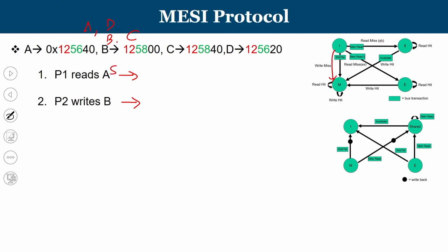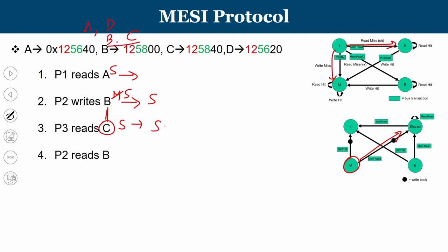P3 reads C: since B and C are in the same cache block, P3 is effectively reading the same block. P3's copy is in invalid state, so a bus transaction is issued. P2 sees it holds B/C in Modified state and responds. P2's block downgrades and both P2 and P3 hold the block in the Shared state. P2 then reads B: this is a local hit — no bus transaction needed, strictly local.